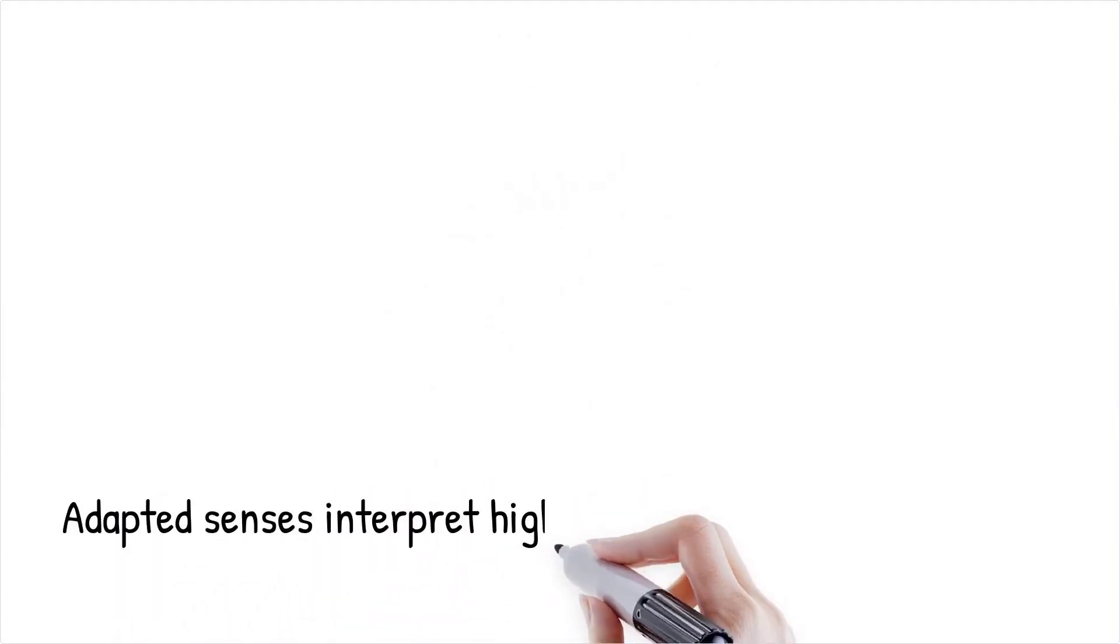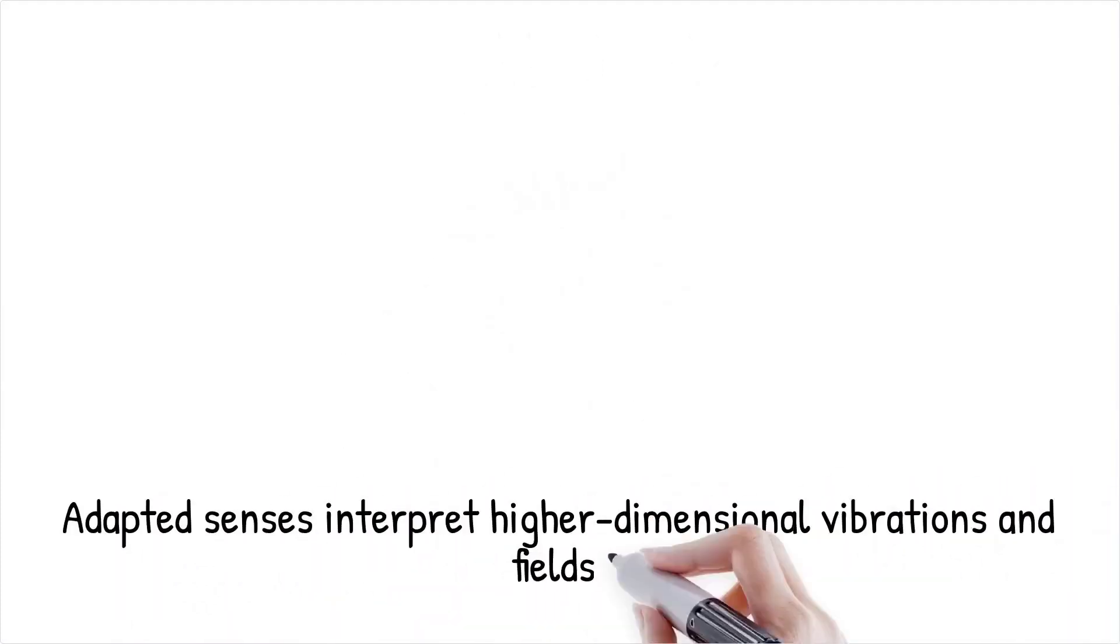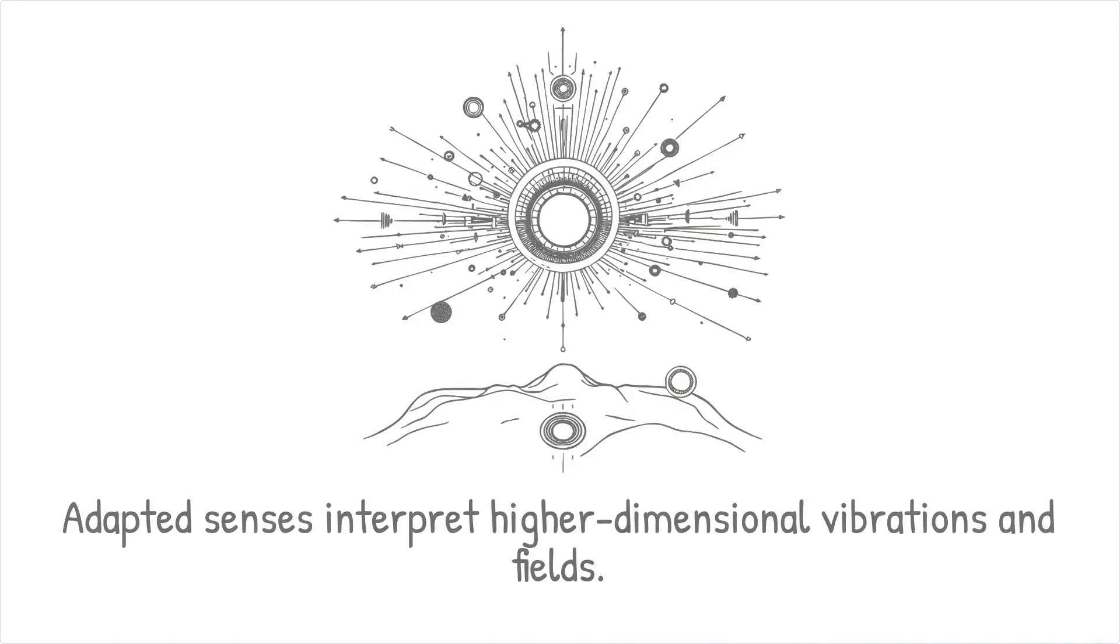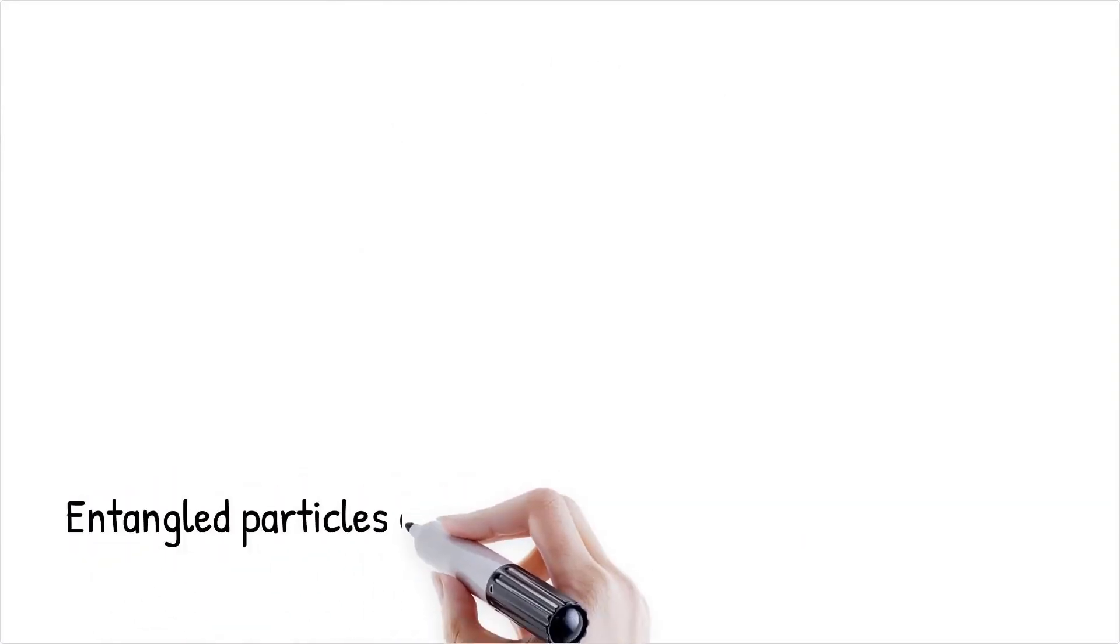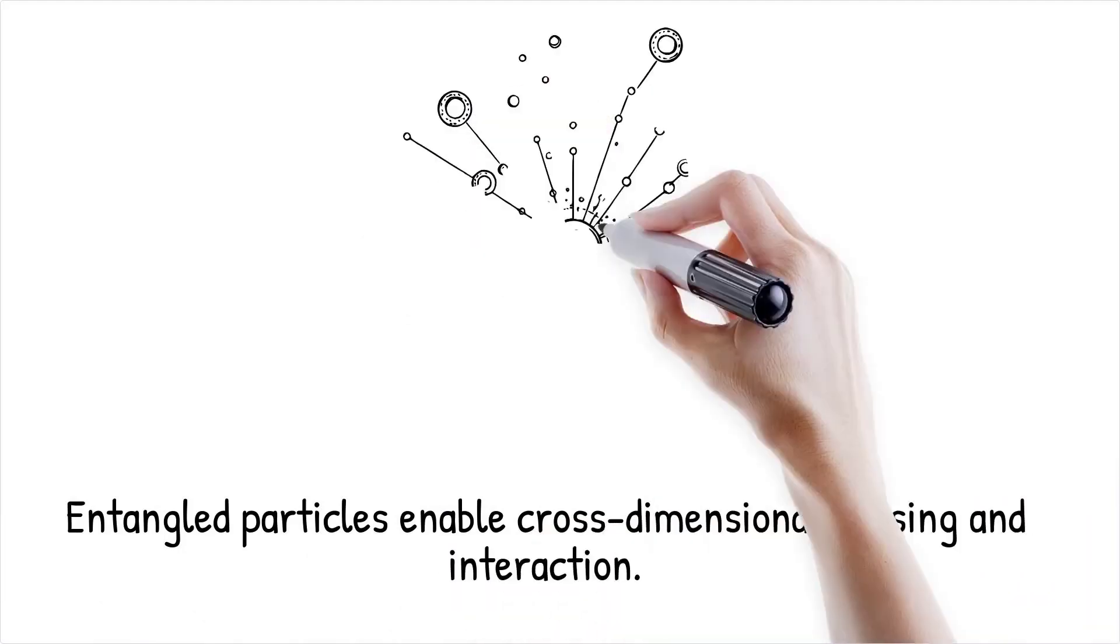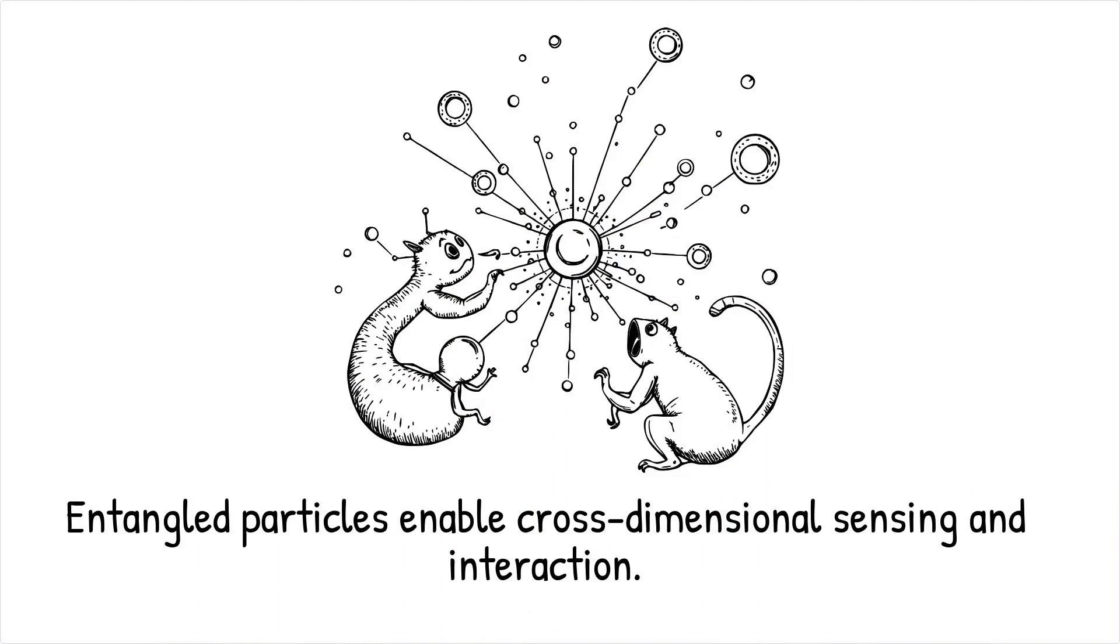Other senses, such as touch or hearing, might also adapt to interpret phenomena like vibrations or fields in higher dimensions. Quantum mechanics could play a pivotal role in these sensory adaptations. Entangled particles might allow for instantaneous information transfer across dimensions, enabling creatures to sense events or objects inaccessible to lower dimensional beings. The evolution of these systems might involve leveraging higher dimensional physics, such as tunneling or resonance effects, for detection and interaction.